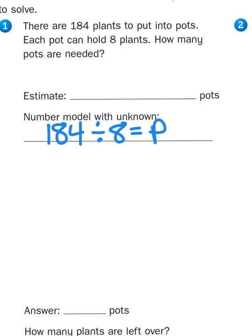So now we need to come up with a rounded amount that will get us close to that answer. Well, 184 if rounded to the nearest hundred would round up to 200 and 8 rounded to the nearest 10 would round up to 10. So if I have a problem where I'm dividing 200 by 10, or basically 20 with 1 extra 0 divided by 1 with 1 extra 0, my answer is going to be 20. So I need about 20 pots to get this job done.